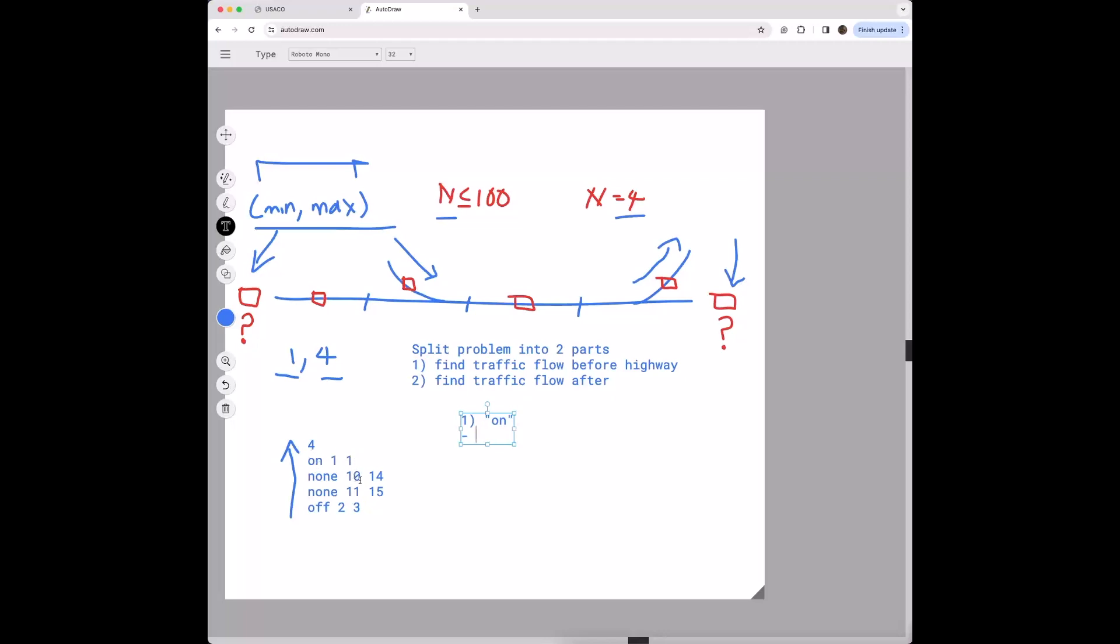So what do we do if we encounter an on? Currently we saw that if it's an on, we can just subtract from both the min and the max and update the range for our answer. I'm actually just going to call it a_min and a_max.